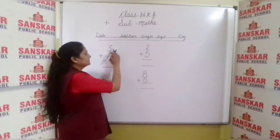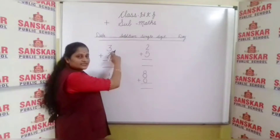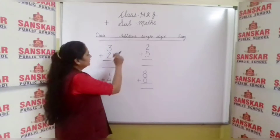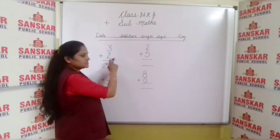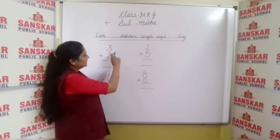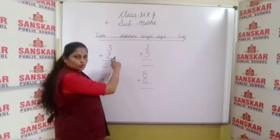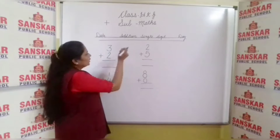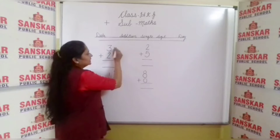Now look at them. This one is number three and this one is two. Now what do we do? Add two digits.